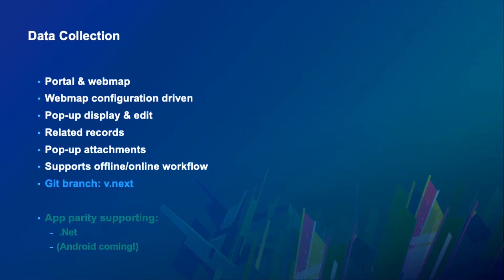Identifying features on the map allows you to bring up a pop-up view, and that pop-up view also allows you to edit that record. Part of that pop-up view also consists of related records. We currently don't support many-to-many-to-many related records, but we do support others. We also support, currently in this open-source project, photo attachments for adding.